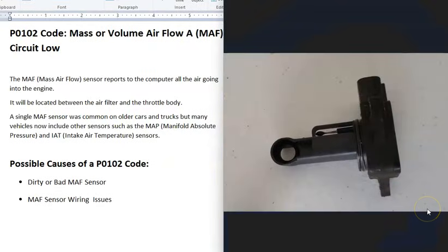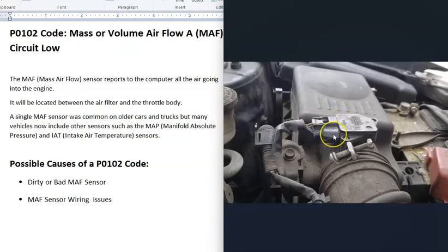Some engines have a MAF sensor (Mass Airflow Sensor) that reports to the computer how much air is going into the engine. It's located between the air filter and throttle body, usually on the air intake hose. When you get a P0102 code, something's gone wrong and the computer is seeing an issue with the MAF sensor.